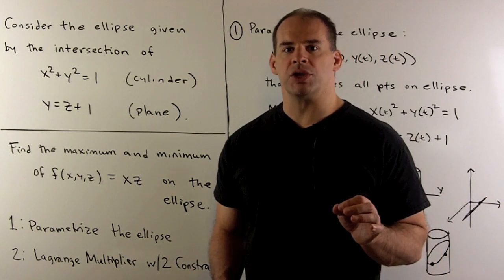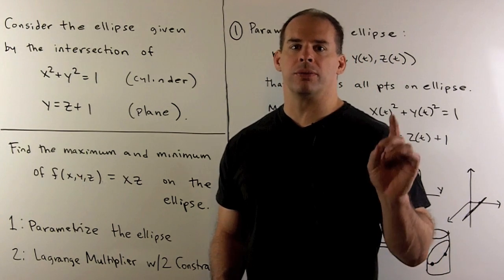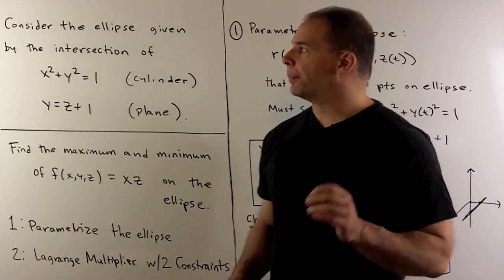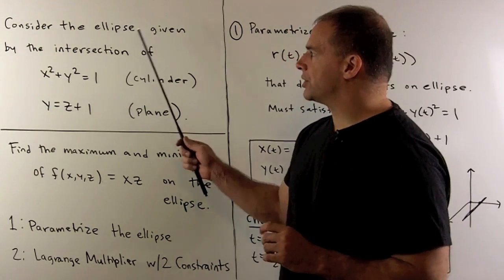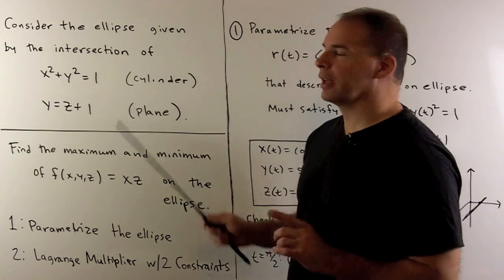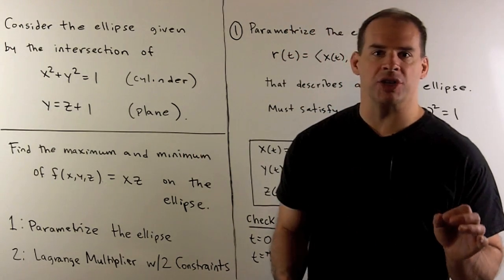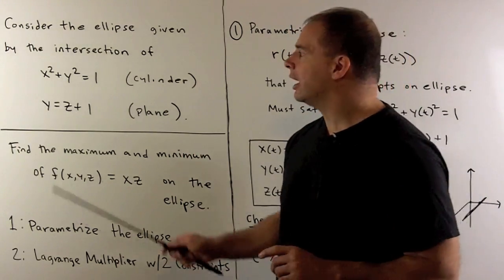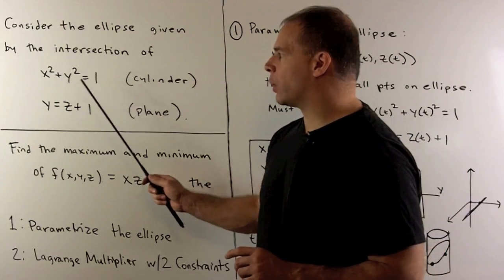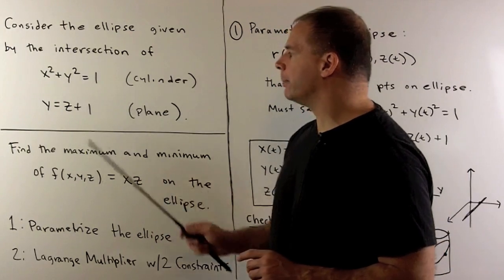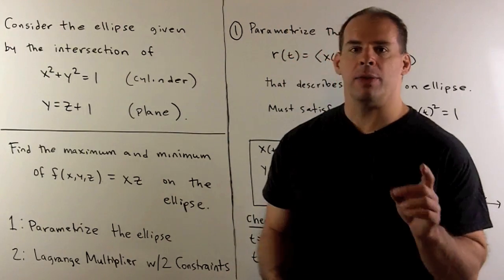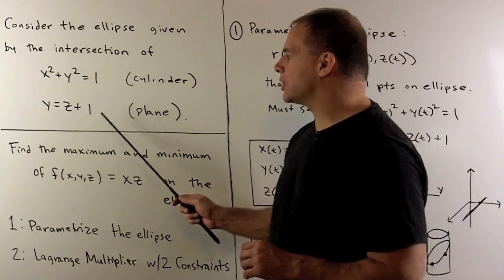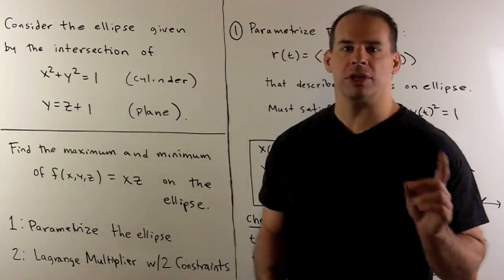Let's look at an optimization problem in three variables. I want to consider the ellipse given by the intersection of the cylinder x squared plus y squared equals 1, and the plane y equals z plus 1 in 3-space.